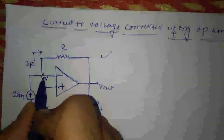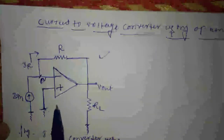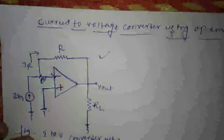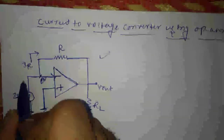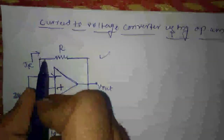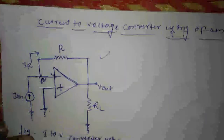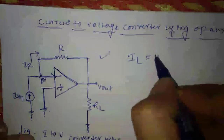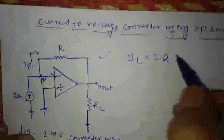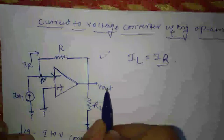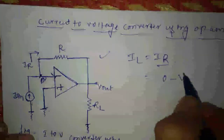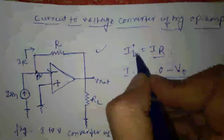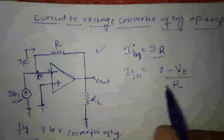By the concept of virtual ground, since the positive terminal voltage is zero, the negative terminal voltage is also zero volts. Also, the op-amp will not take any current at the input terminal — ideally no input current flows into it. Therefore, whatever amount of current i_input is flowing, the same amount will also flow through the feedback resistance R. Applying KCL at this node: i_input equals i_R.